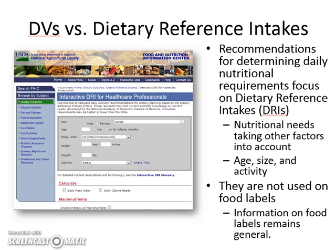DVs versus dietary reference intakes: the FDA makes recommendations for daily nutritional requirements called DRIs. They account for other factors according to your size, weight, and activity level. So if you're overweight and trying to lose weight, your daily value will be different from what the label says — you'll go off your DRI instead. You can go to the interactive website pictured here, type in your data, and figure out what your DRI percentage daily values would be.